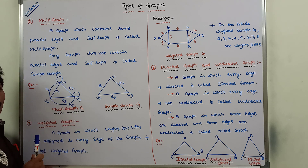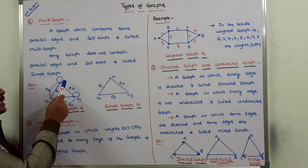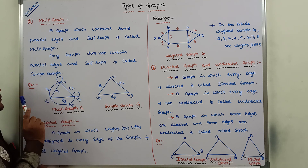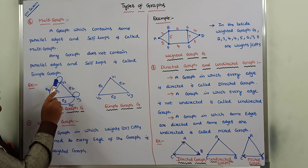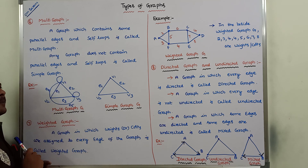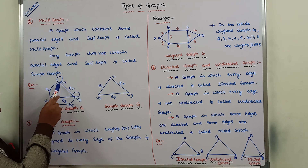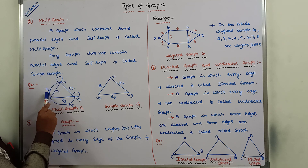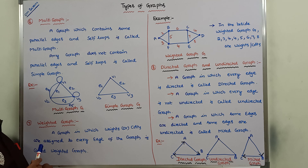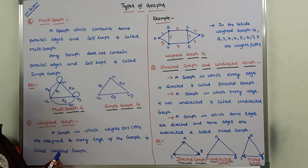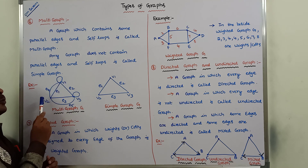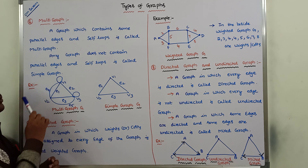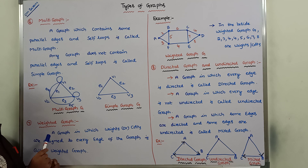Here, assume that this is one graph. In that graph, there are three vertices V1, V2, V3, and five edges E1, E2, E3, E4, E5. Now consider two vertices, V1 and V2. V1 and V2 are connected by using two edges — E1 is one edge and E4 is another edge.